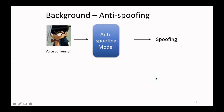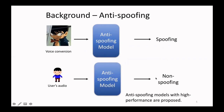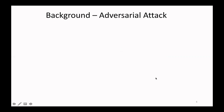For example, if the audio is a piece of spoofing audio generated by voice conversion, the anti-spoofing model will label it spoofing and block it. While if the input is a piece of user's audio, the anti-spoofing model will label it non-spoofing and allow the audio to pass to the ASV system. In the ASV Spoof 2019 challenge, many high performance anti-spoofing models have been proposed. However, previous works show that high performance anti-spoofing models are subject to adversarial attacks.